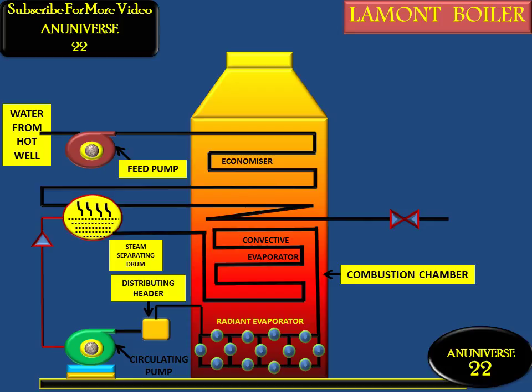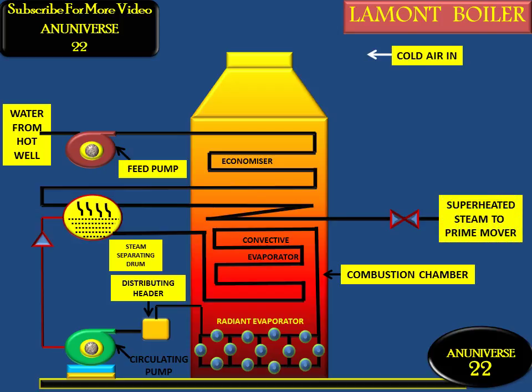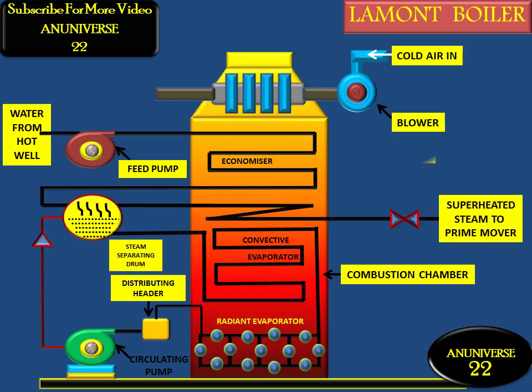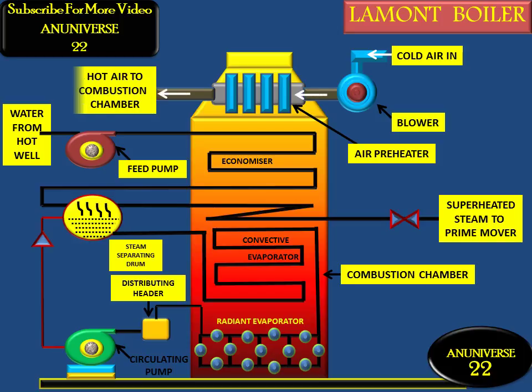This is the superheater, which is used to convert saturated steam into superheated steam. Saturated steam causes corrosion, so it is converted into superheated steam. This is the blower, connected with the air preheater. The main function of the air preheater is to preheat the air before it enters the furnace, and from the air preheater the preheated air goes to the combustion chamber.